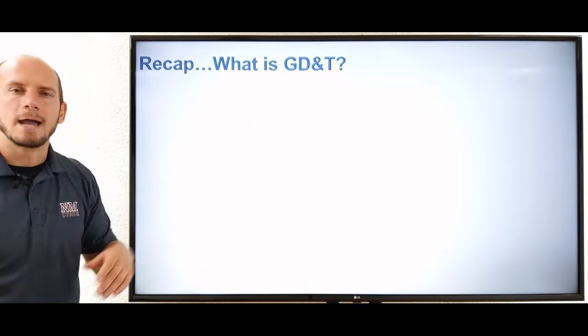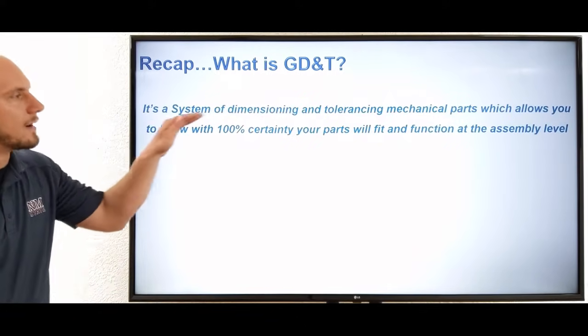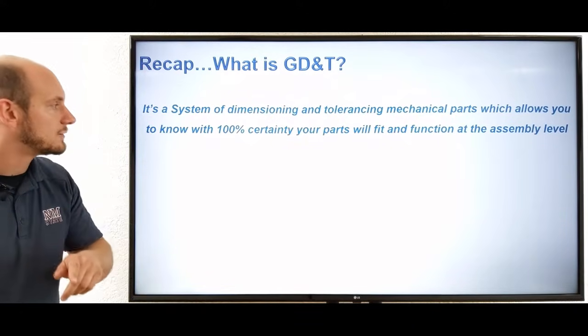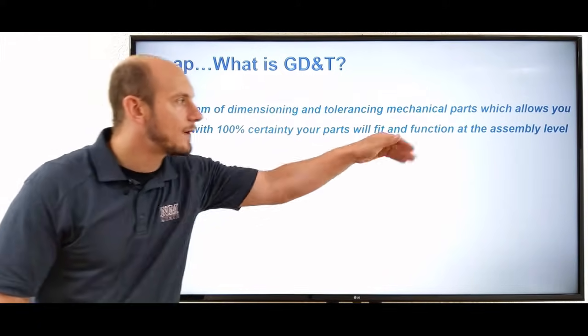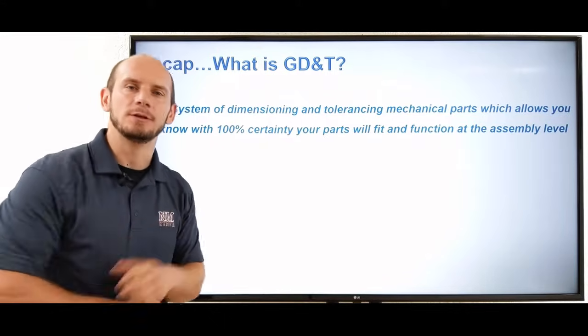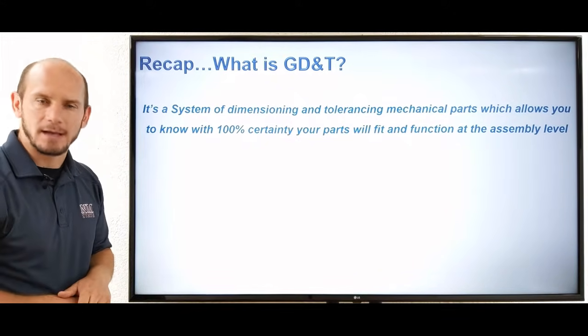One more time, what is GD&T? GD&T, it's a system of dimensioning and tolerancing mechanical parts, which allows you to know with 100% certainty that your parts will fit and function at the assembly level where those parts are actually useful. And it's a system from the American Society of Mechanical Engineers.